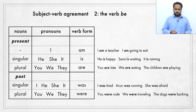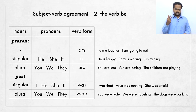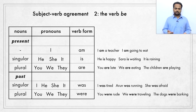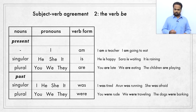Verbs in English have two present tense forms — eat/eats, walk/walks — and one past tense form. But the verb be has three present tense forms: am, is, and are. In the present, if the subject is I we say am: 'I am a teacher,' 'I am going to eat.' If the subject is a singular noun or he, she, or it, we use is: 'He is happy,' 'Sarah is waiting,' 'it is raining.' And if the subject is a plural or you, we, or they, we use are: 'You are late,' 'we are eating,' 'the children are playing.'